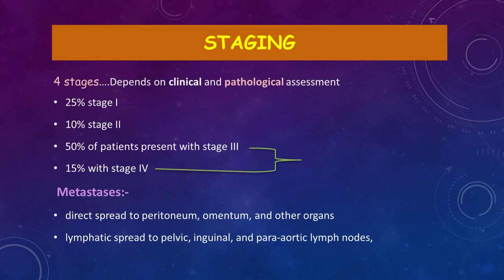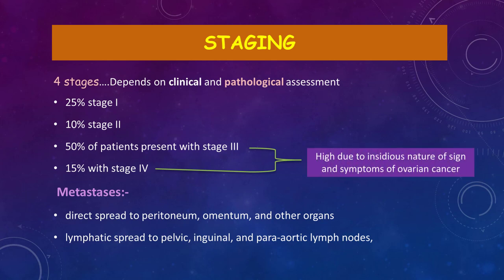Regarding the staging of ovarian cancer, there are four stages based on clinical and pathological assessment. Stage 1 accounts for about 25%, stage 2 for 10%, stage 3 for 50%, and stage 4 for 15% — so approximately 65% of females present with stage 3 or higher. This is due to the insidious nature of signs and symptoms; most symptoms appear later when there is metastasis. Metastasis occurs either directly to the peritoneum and omentum, or lymphatically to pelvic, inguinal, and para-aortic lymph nodes.